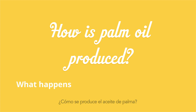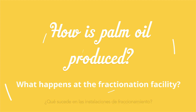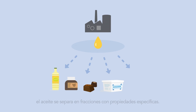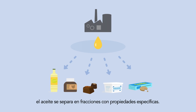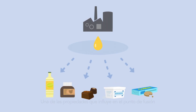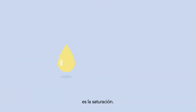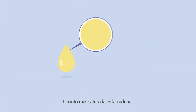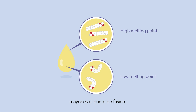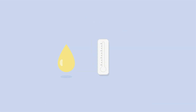How is palm oil produced? At the fractionation facility, the oil is separated into fractions with each specific properties. One of the properties that influences the melting point is saturation. The more saturated, the higher the melting point. Palm oil is a mixture of different fatty acids, each with a specific melting point.